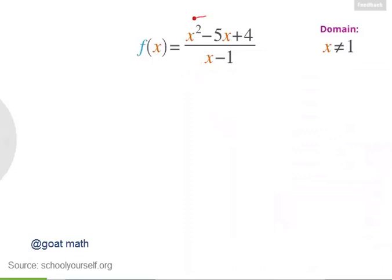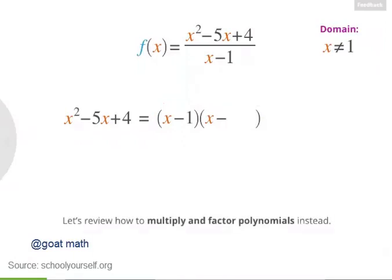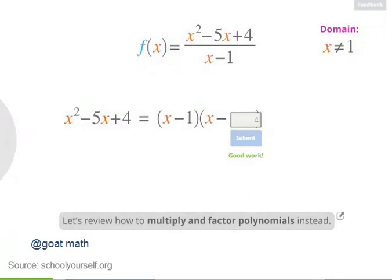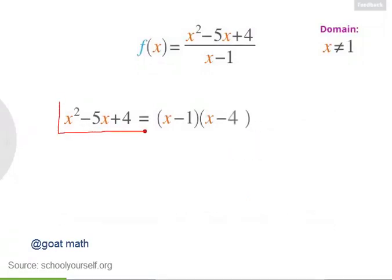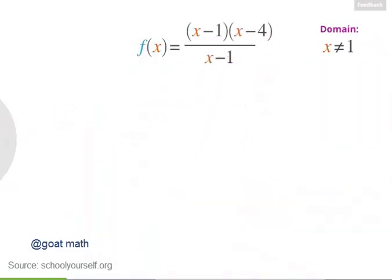Next, try factoring the numerator of this fraction. x squared minus 5x plus 4 equals x minus 1 times x minus 4. So let's plug this back into the numerator of our function. Notice that we have x minus 1 in both the numerator and denominator — we can cancel these out, leaving us with x minus 4.